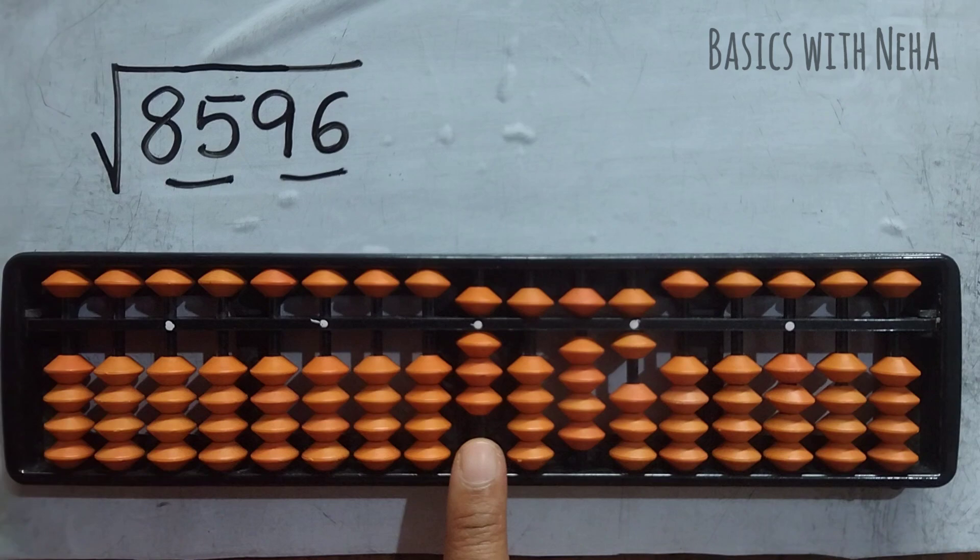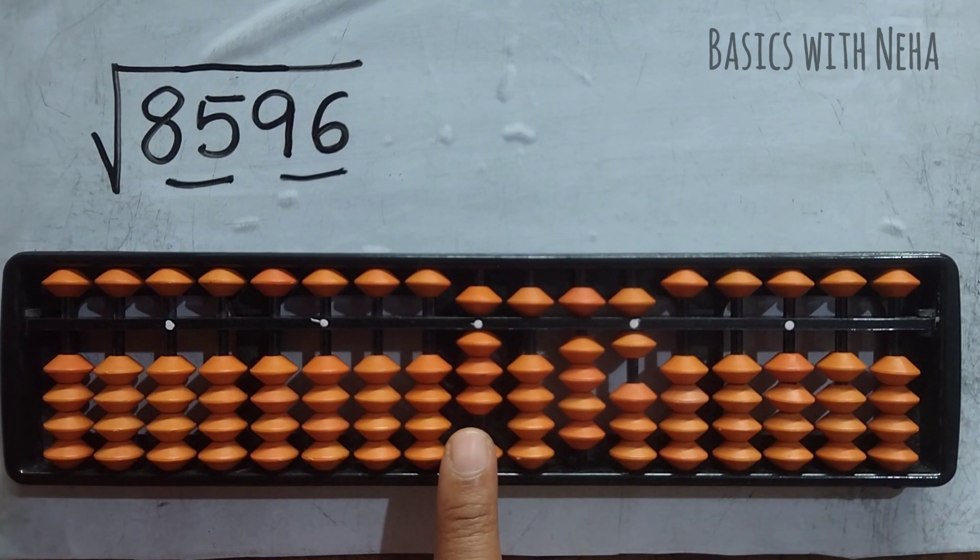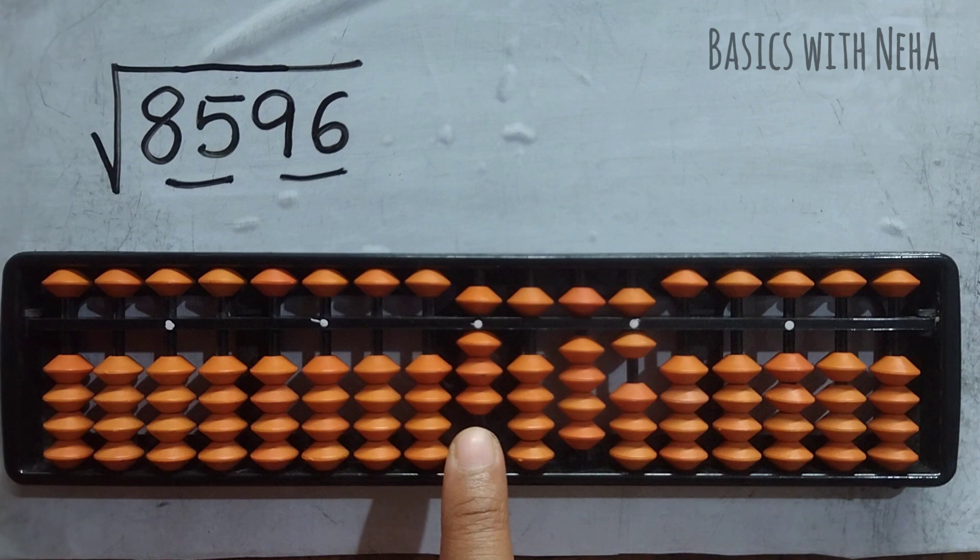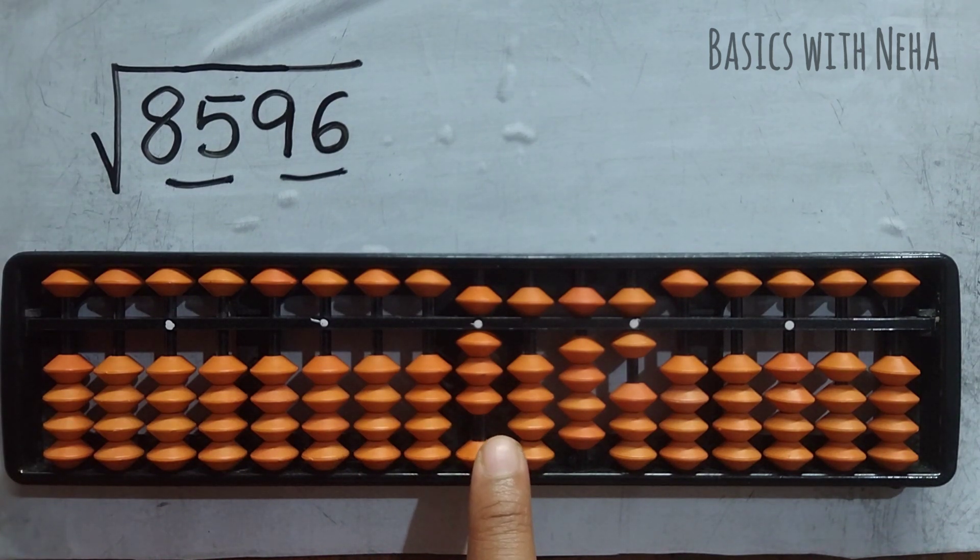Now we should see the first group from the left side. This is the first group, 85 is the first group. We have to find a number which when squared is near to 85 or equal to 85. So we know that 9 squared is 81.